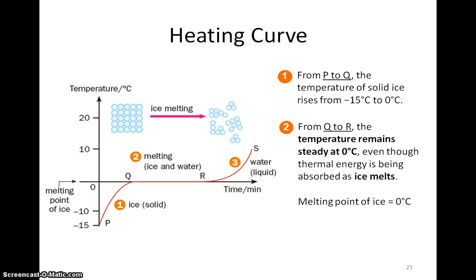From Q to R, the temperature of the substance remains steady at 0 degrees Celsius. Since the temperature of the substance does not change, there is a change in state and the ice melts. Hence, from the heating curve, the melting point of ice is 0 degrees Celsius.